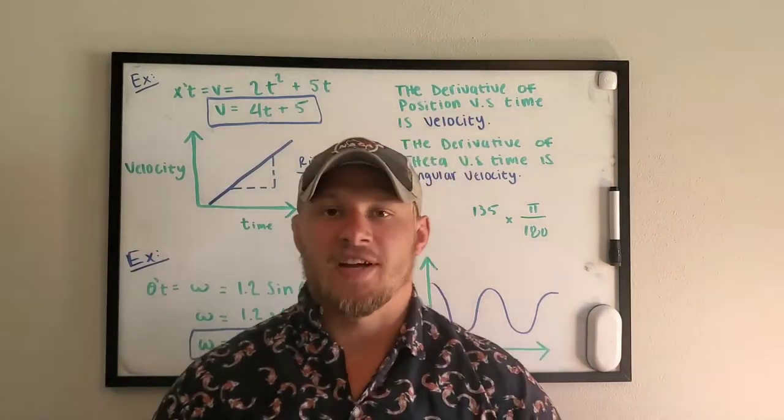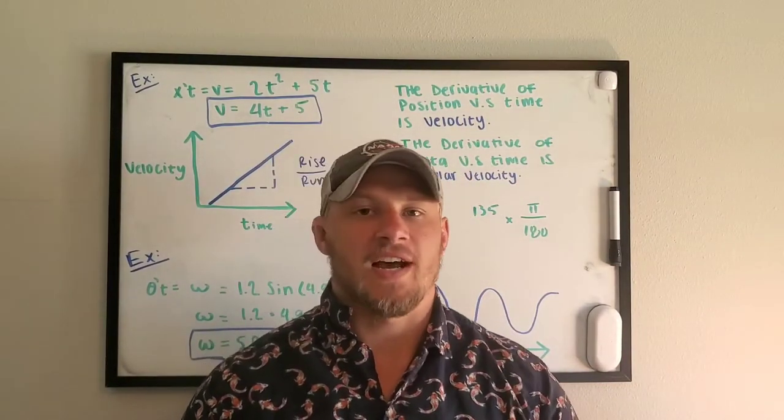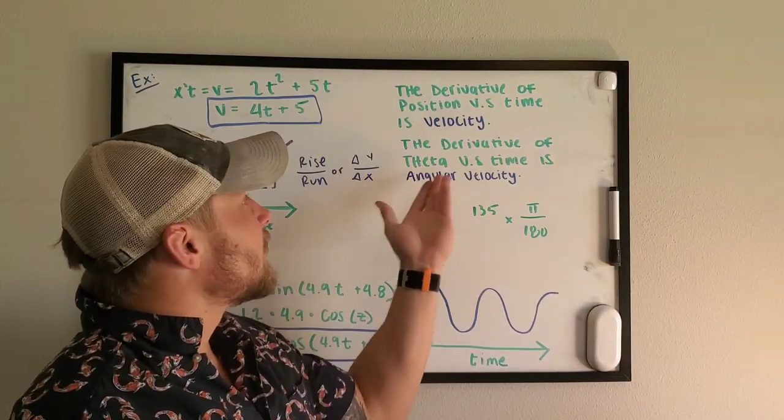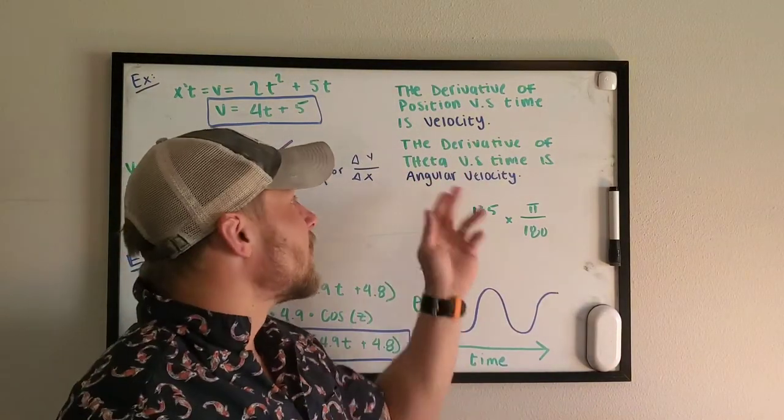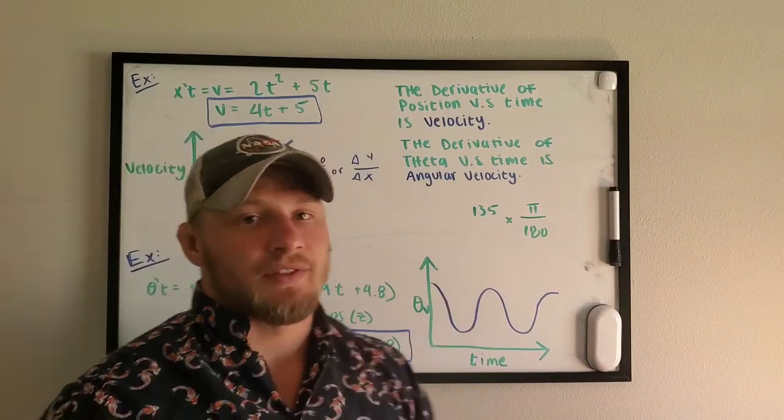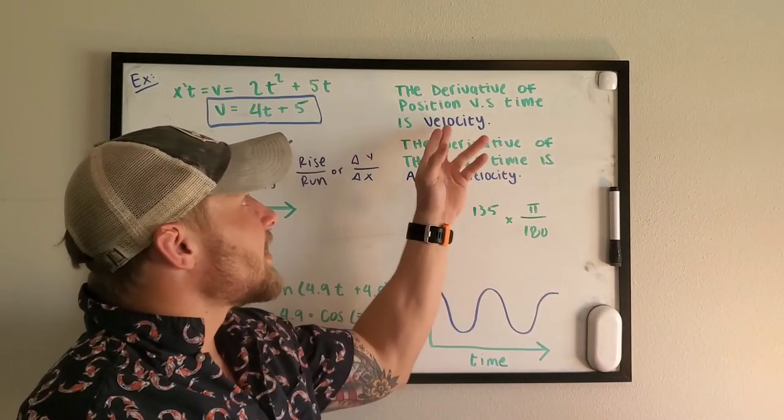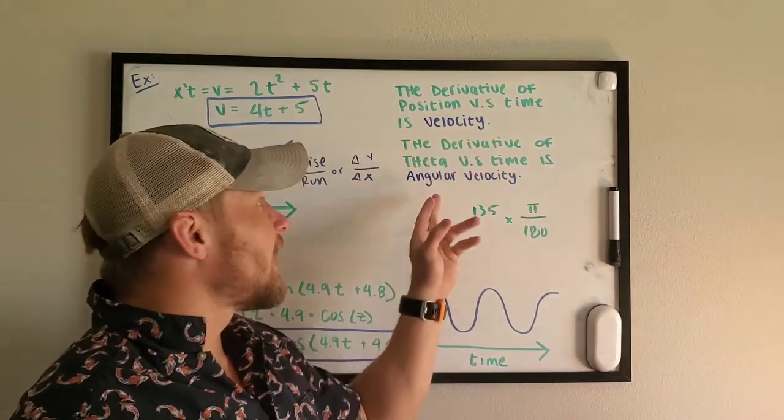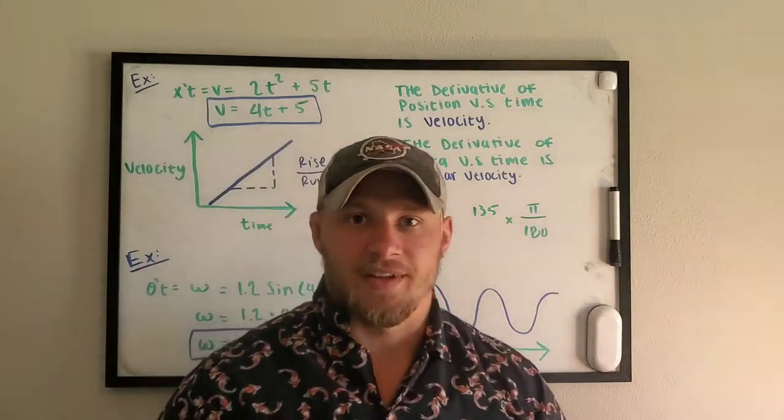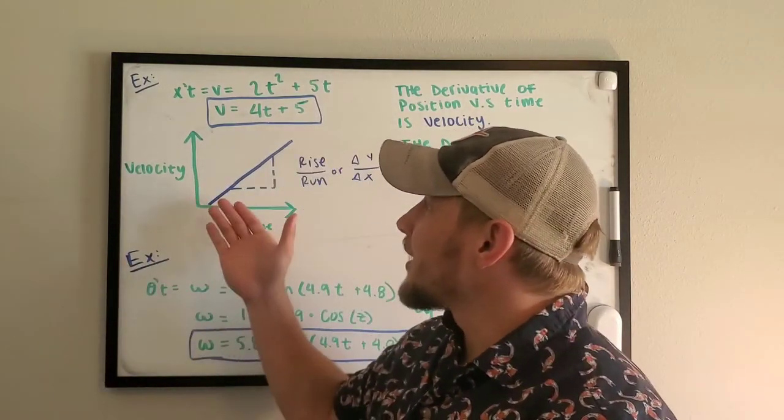Well, we don't have a position versus time graph. We have the angle versus time graph. Well, the derivative of theta, which is that angle versus time, is angular velocity. So really we can change this to linear velocity and keep this as angular velocity. Here is what I mean.